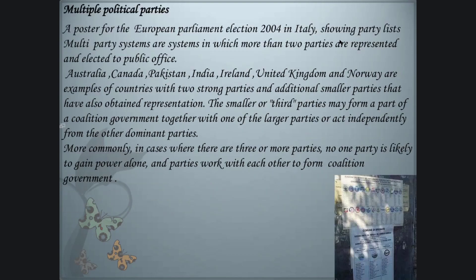In a multiparty system, more than two parties are represented and elected to public office. Australia, Canada, Pakistan, India, Ireland, United Kingdom, and Norway are examples of countries with two strong parties and additional smaller parties that have also obtained representation. Smaller or third parties may form part of a coalition government together with one of the larger parties, or act independently. Where there are three or more parties, no single party is likely to gain power alone, and parties work together to form coalition governments.